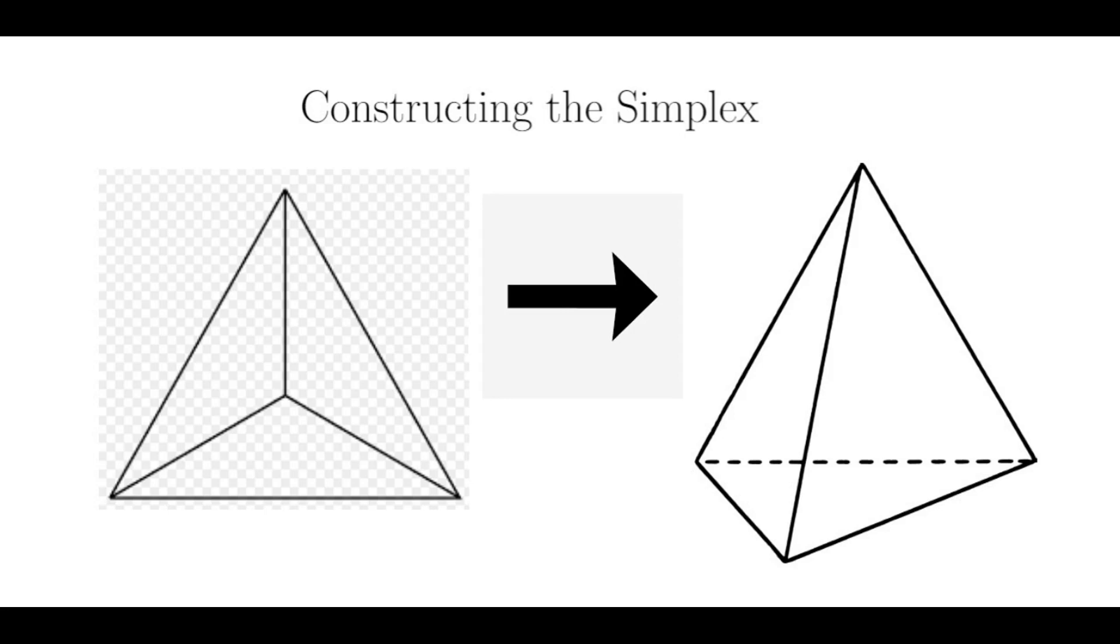Recall that a k-simplex is a k-dimensional analog of the triangle, or tetrahedron, and there is a simple construction for creating a k-plus-one-dimensional simplex from an existing k-simplex. You draw a point at the center of your k-simplex and connect it to all the existing vertices. Then you increase the length of these line segments to match, and that's going to pop out your central vertex into the k-plus-one dimension.